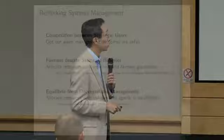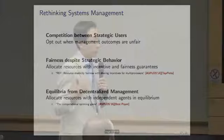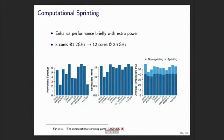I want to spend the last few minutes talking about our most recent work: decentralizing management. I'm glad Sharif spoke about power management earlier because we're looking at very much the same setting — how do you allocate resources with independent agents that produce a stable equilibrium? We refer to this as the computational sprinting game, managing power and sprints in a system with a shared power supply.